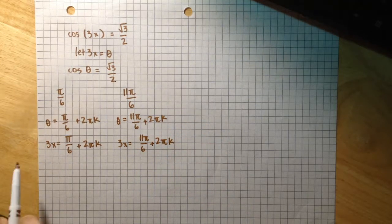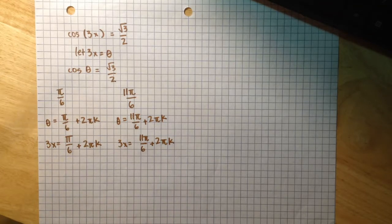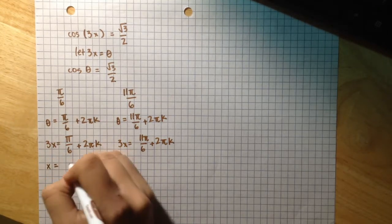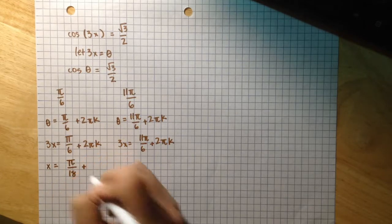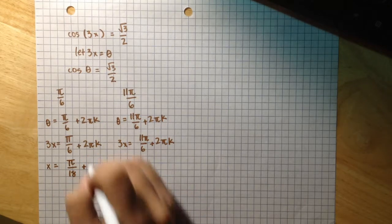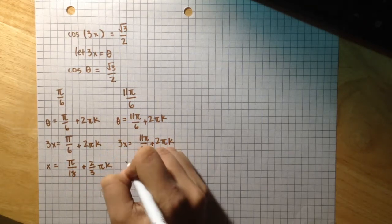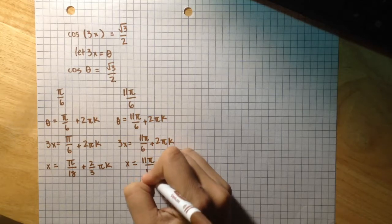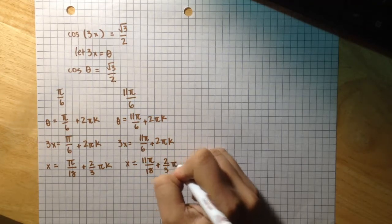And now I'm going to isolate x, so divide this whole side and this whole side of the equation by 3 to get x equals π over 18 plus 2/3 π k, and 11π over 18 plus 2/3 π k.